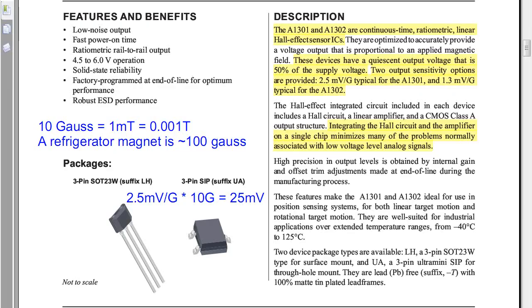Let's look at a spec sheet from the Allegro A1301 and A1302 linear Hall sensors. These devices have a quiescent output voltage that is 50 percent of the supply voltage, half of VCC. What is interesting, these spec sheets will also give you the sensitivity. In the case of the A1301, it's 2.5 millivolts per gauss. What is a gauss? 10 gauss is one millitesla. One millitesla is 0.001 tesla. An MRI machine has magnets that are around 1.5 tesla.